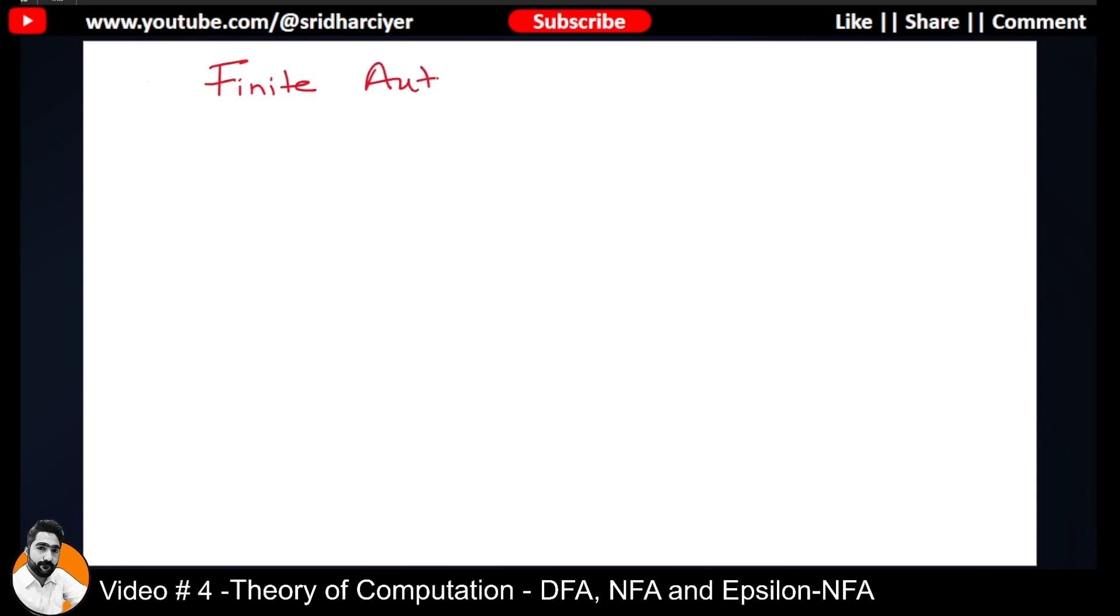I have already introduced you to this topic called finite automata in the past few lectures. In this video, the agenda is going to be what are the various types of finite automata: DFA, NFA, and Epsilon NFA. These are the three types of finite automata.